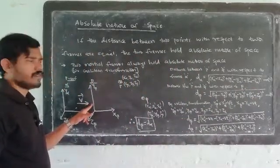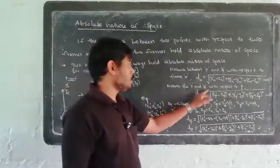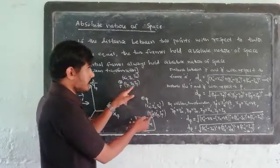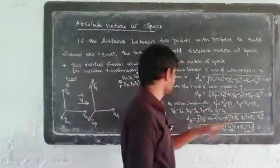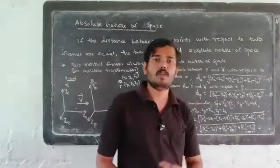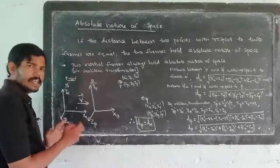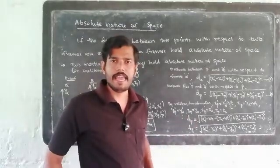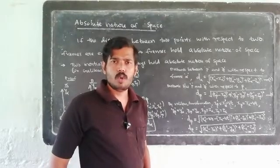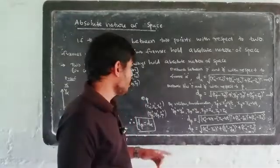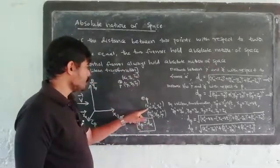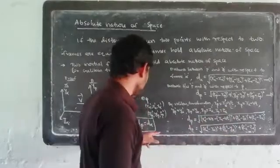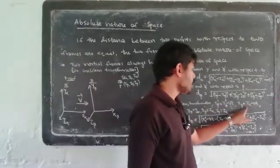Now for frame beta, the distance d-beta between P and Q is equal to the square root of (x-beta-dash minus x-beta) squared plus (y-beta-dash minus y-beta) squared plus (z-beta-dash minus z-beta) squared. This is equation number 2. By the Galilean transformation, x-beta is equal to x-alpha minus v times t.